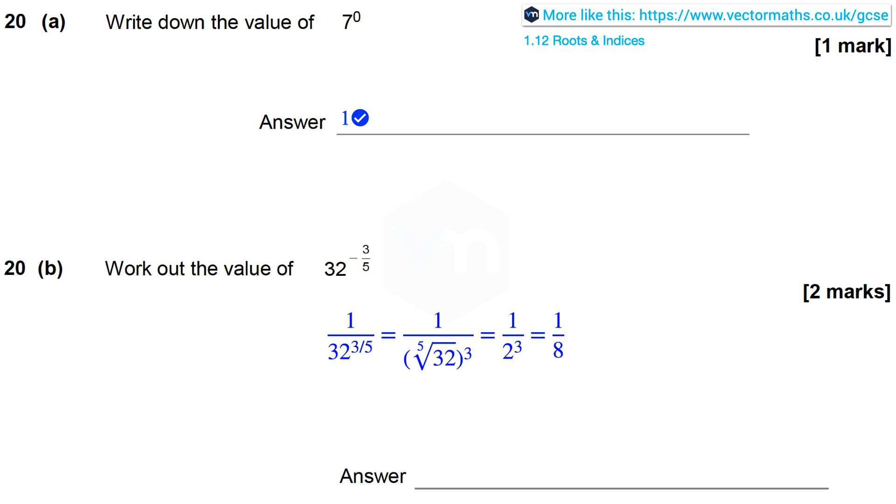Now the fifth root of 32 is 2 because 2 to the power 5 equals 32. So this equals 1 over 2 to the power 3, which is 1 over 8.